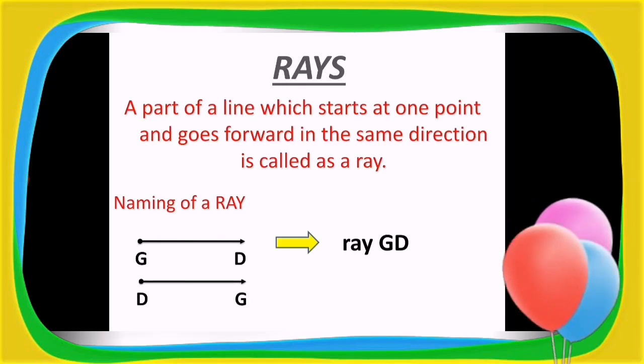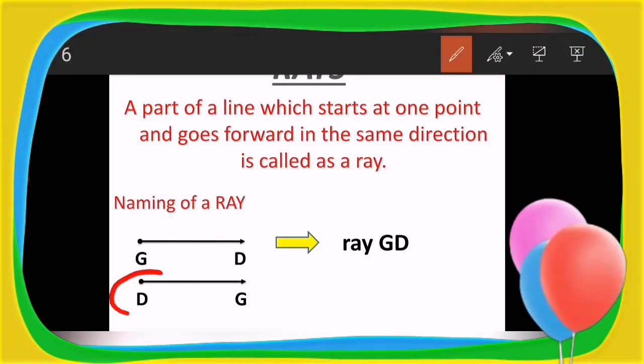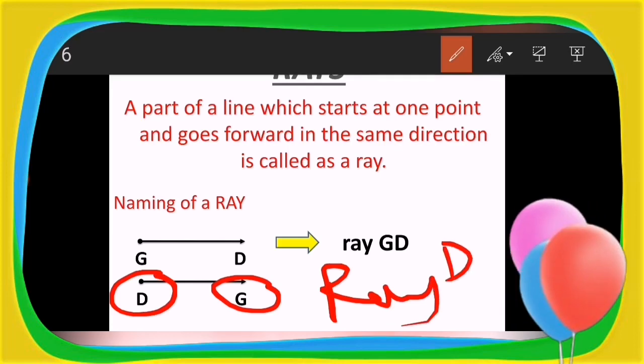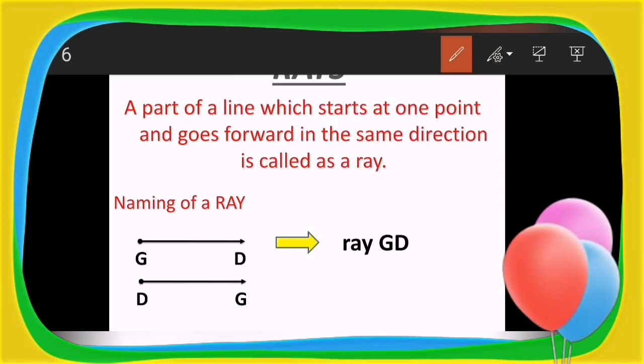Now check out the second diagram over here presently. If you observe again, the point is D and the direction is G. So how do we write the name of this ray? Ray DG. I hope it is clear to you, correct?